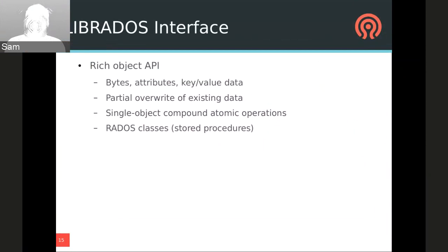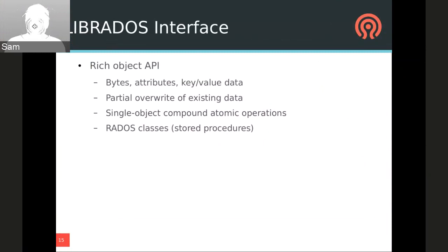The interface is quite rich. We support partial overwrites of objects rather than requiring objects to be overwritten in their entirety. Partial overwrites make something like RBD pretty simple — the block device is simply broken up, striped or chunked across four-megabyte pieces, each of which is a RADOS object. Each object can also have a set of user-defined xattrs, useful for storing small amounts of frequently accessed metadata. We also associate with each object an ordered key-value mapping called an object map, currently implemented by keeping a LevelDB instance within each OSD.